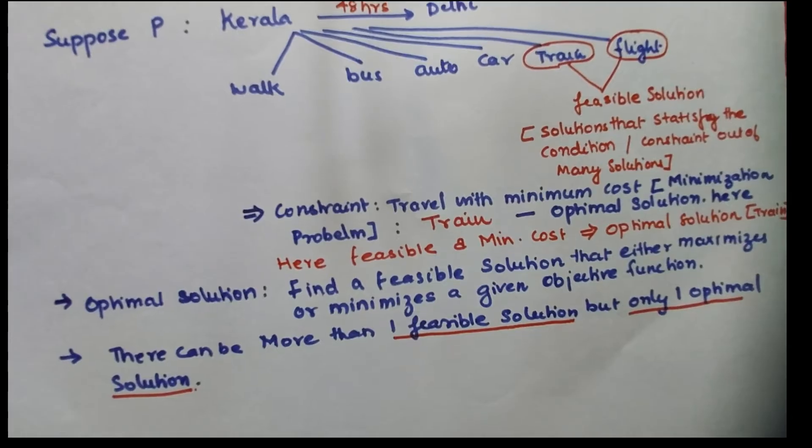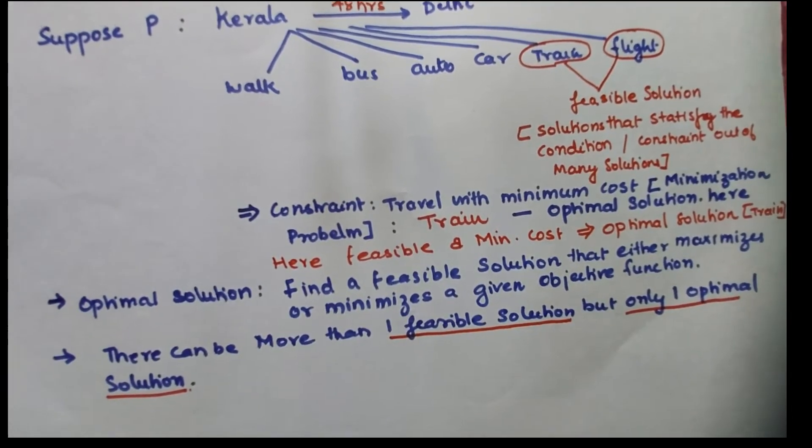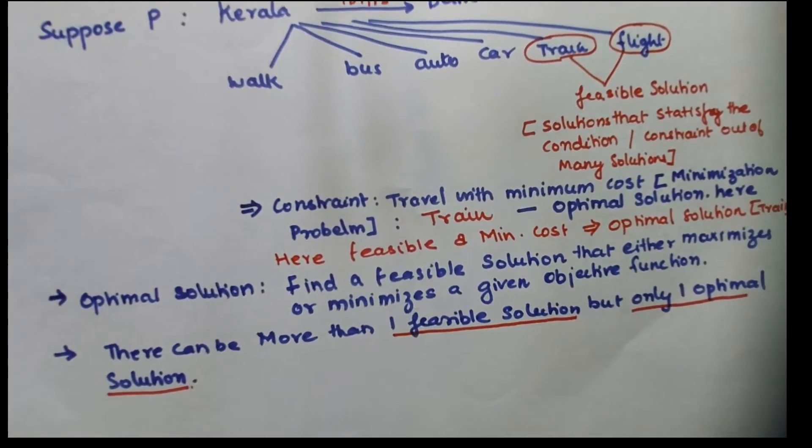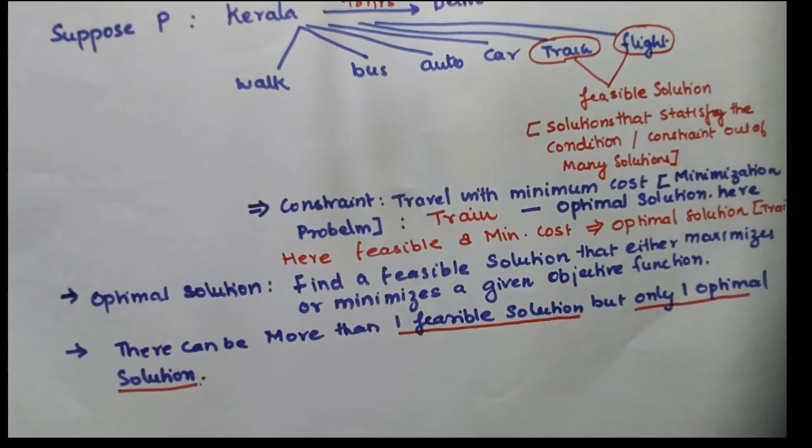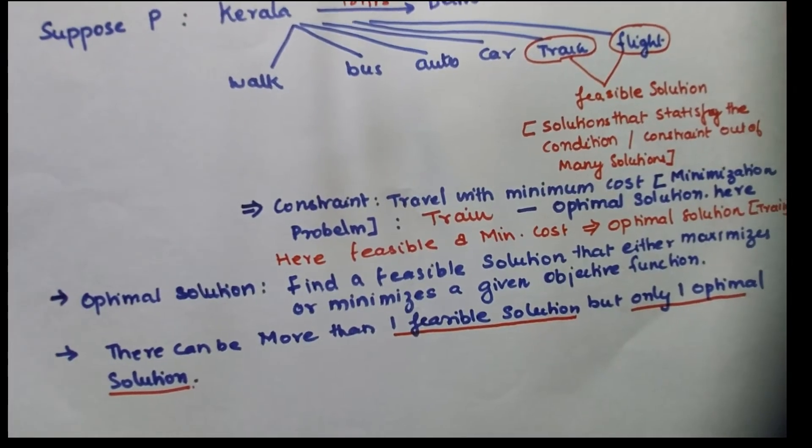You can travel by train or by flight. So there was more than one feasible solution, but there was only one optimal solution, which was the train.